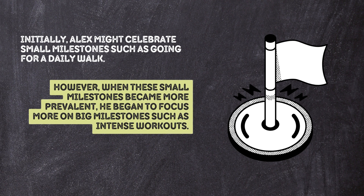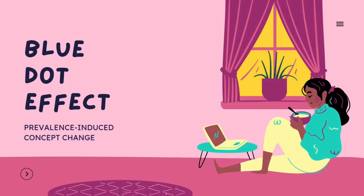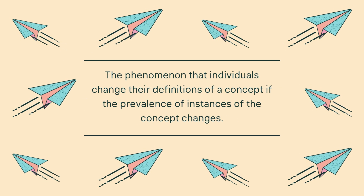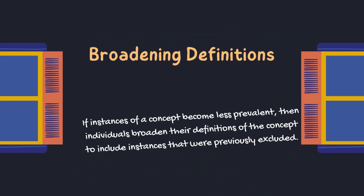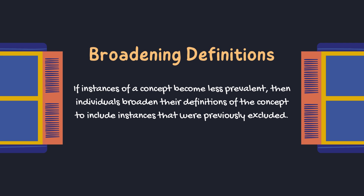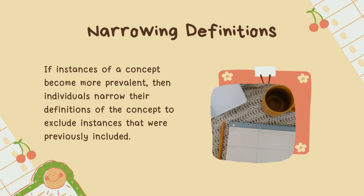Both of these are examples of what is known as the blue dot effect. The blue dot effect is the popular name for prevalence-induced concept change — the phenomenon that individuals change their definitions of a concept if the prevalence of instances of the concept changes. On the one hand, if instances of a concept become less prevalent, then individuals broaden their definitions of the concept to include instances that were previously excluded. For example, Alex narrowed his definition of valid successes to exclude small milestones such as going for a daily walk.